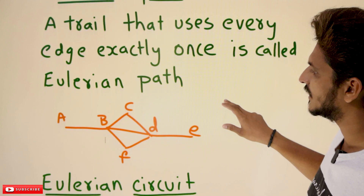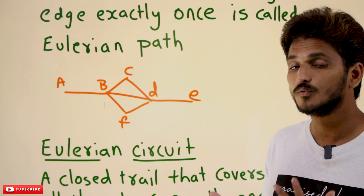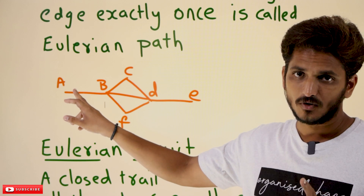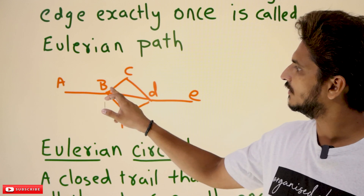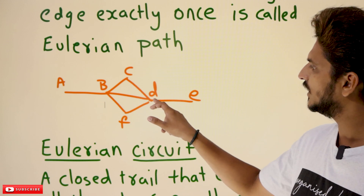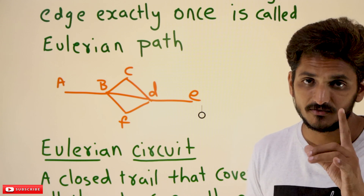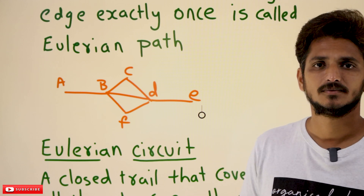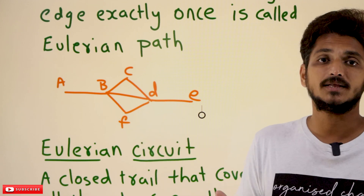With an example you are going to understand it better. Let us take this graph. You can start anywhere — we are taking it from A. So from A we need to move along all the edges exactly once: A to B, B to C, C to D, D to F, F to B, B to D, D to E. We covered all the edges exactly once, meaning we are not repeating the edges. Then we say it is a Eulerian path. For this graph, Eulerian path exists.